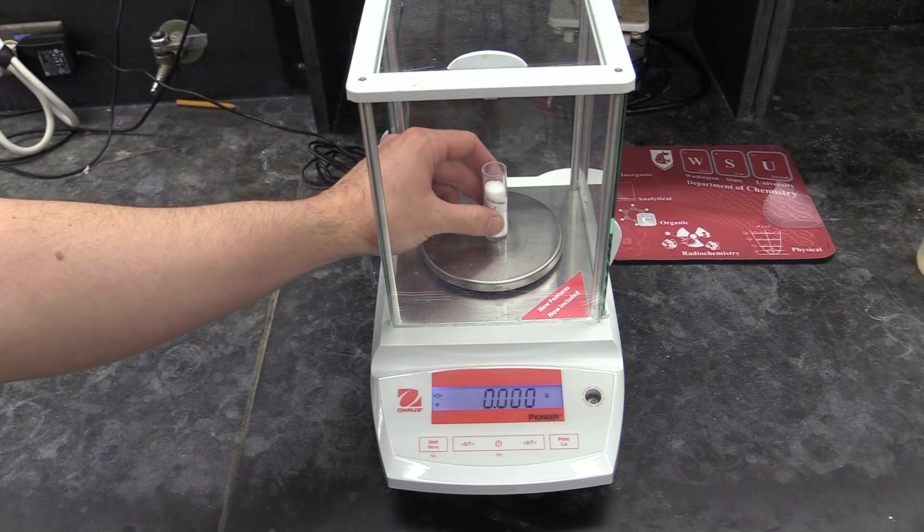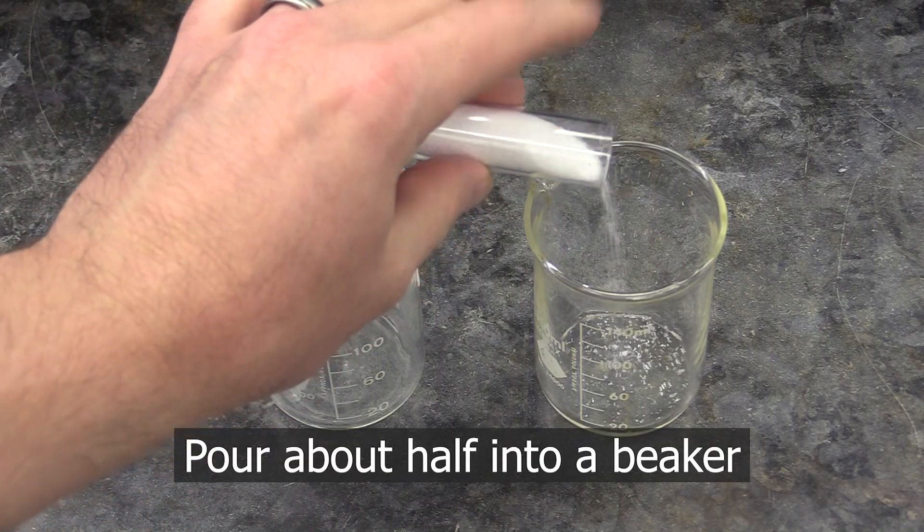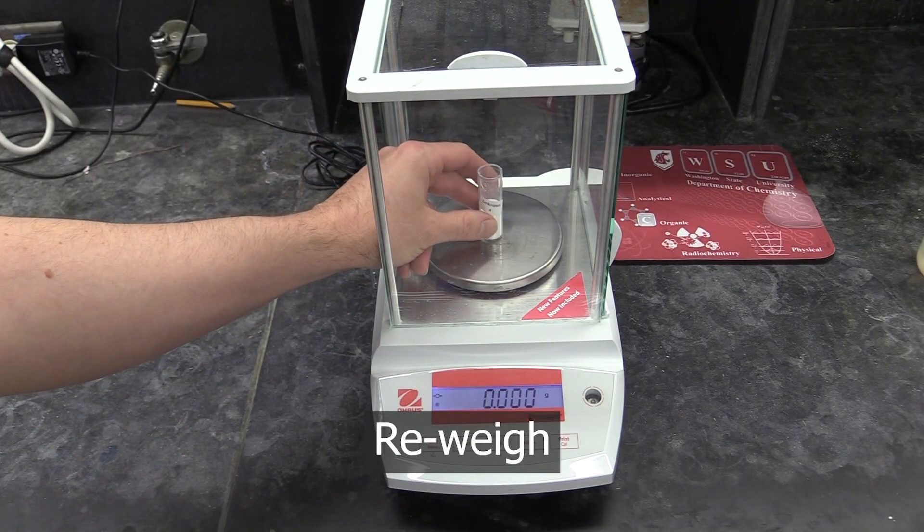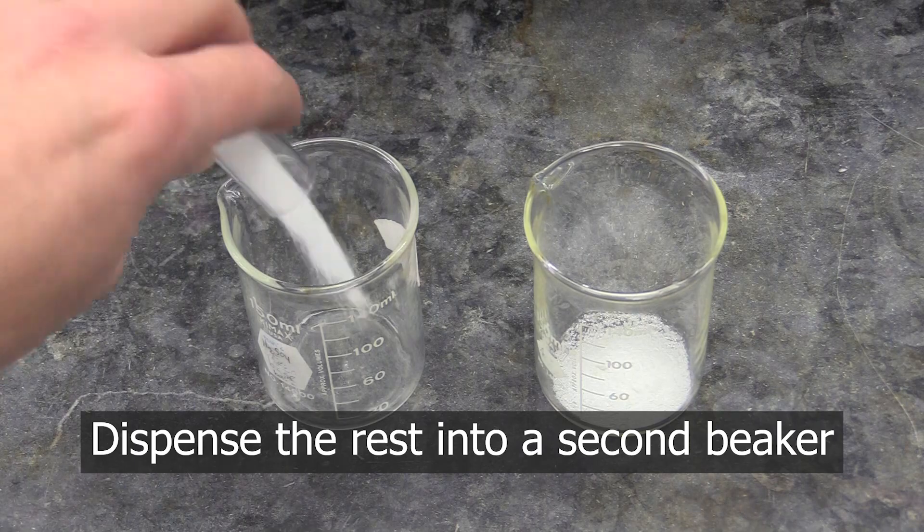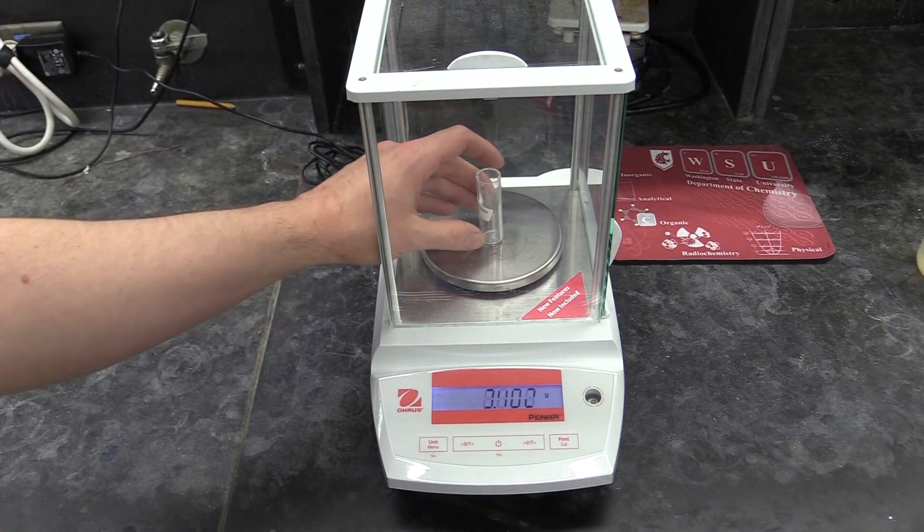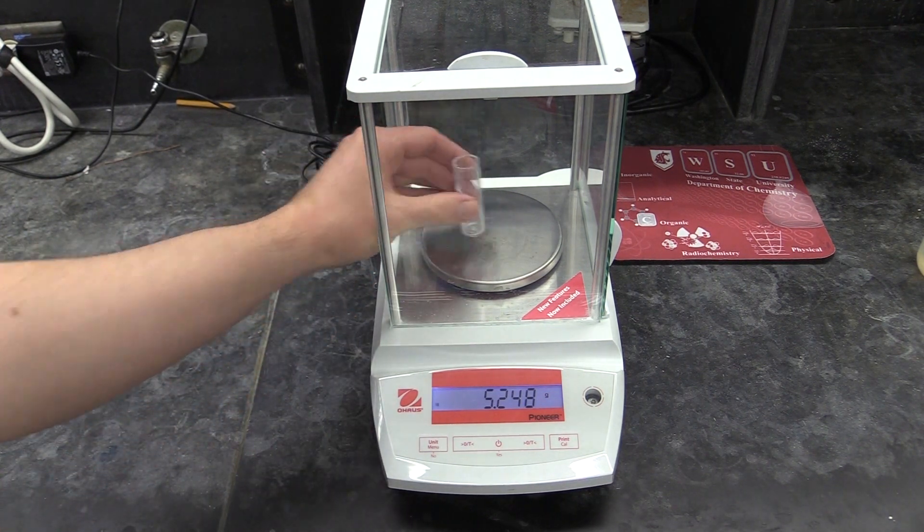The first thing you're going to do is weigh the bottle your unknown salt mixture came in. Pour about half of it into a beaker, re-weigh it, pour the rest into a second beaker, then re-weigh the bottle. In your calculations, you can use the masses from these weighings to figure out how much unknown went into each beaker.